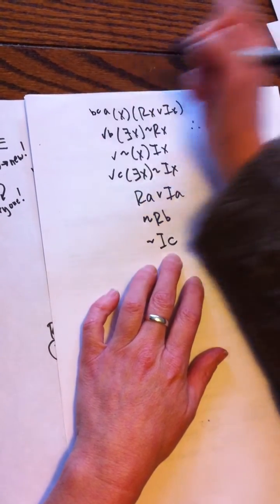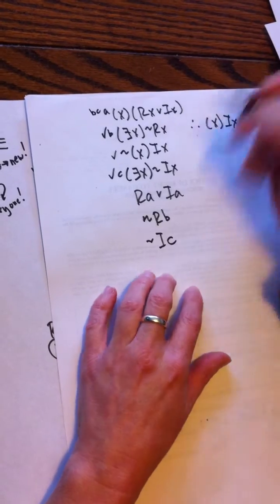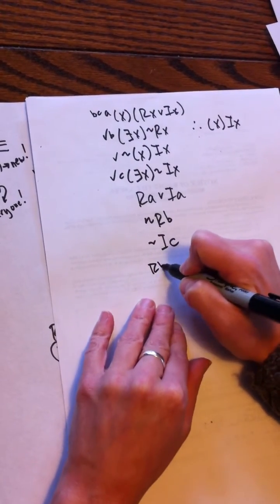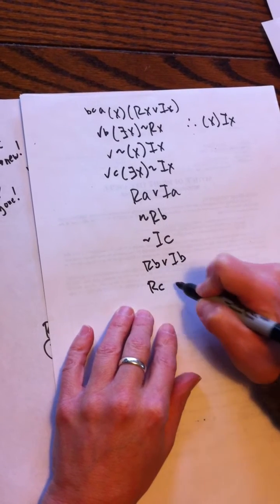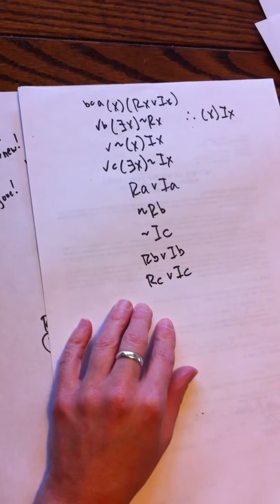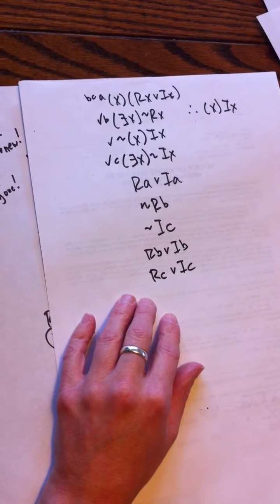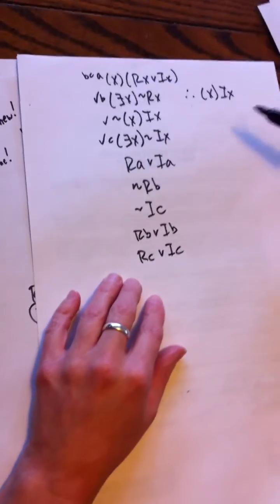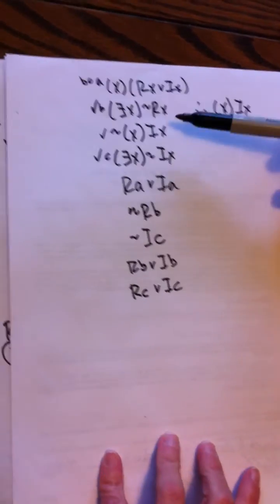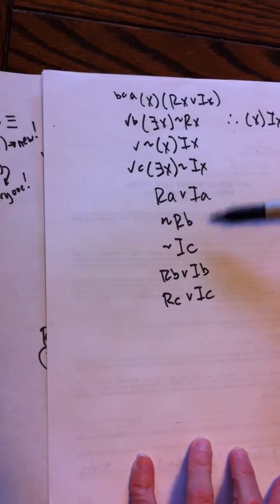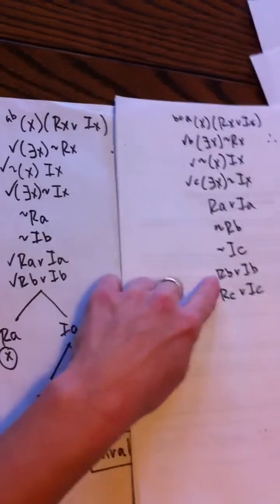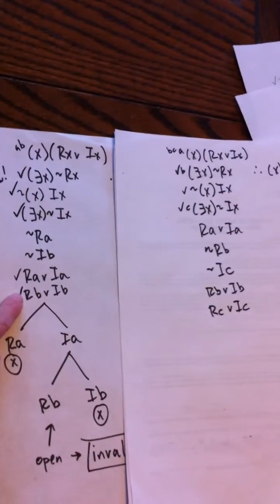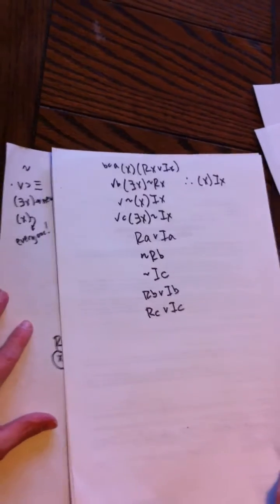So look at Rb or Ib, and Rc or Ic. All right, so basically you can already kind of see why it was better to do the existentials first, because I've introduced more lines than I needed to here. I have these three disjuncts rather than just two.